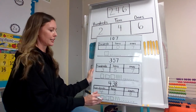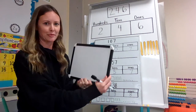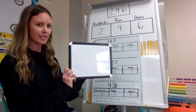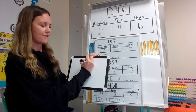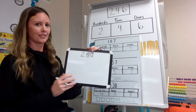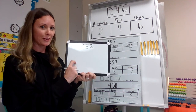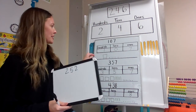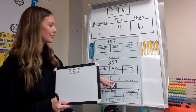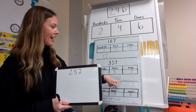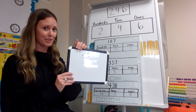So now I would like for you to grab your dry erase board and we're going to practice together. The first one I want you to do is the number two hundred and fifty-two. Write that on your board and go ahead and try it on your own. You are going to make a square for your hundreds, lines for your tens, and little dots for your ones. Go ahead and try that, and then I'm going to show you the answer.